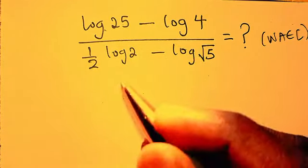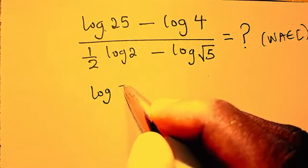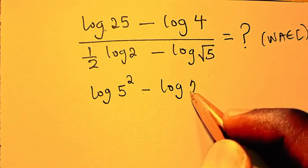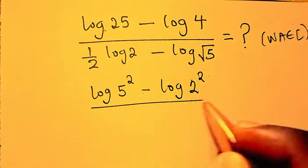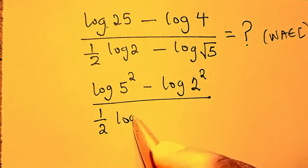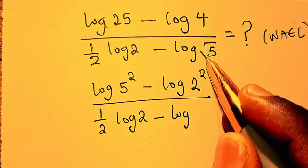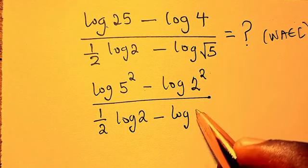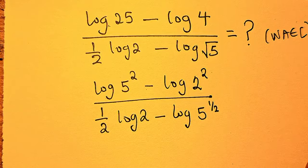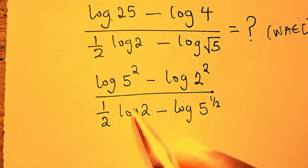You know that here we can have log 25 can be 5 to the power of 2 minus log 4 can be 2 to the power of 2, then divided by here we have 1 over 2 log 2 then minus log - you know this root can be written as 5 to the power of 1 over 2. That is from the law of indices. So from there you can